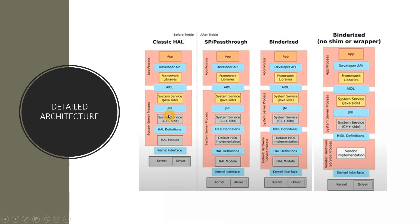So before treble, what was happening is there was a system service written in Java, and the system service written in C++ used to always communicate with the underlying hardware. How this system service written in Java is converted to C++ — they used to talk through JNI acting as a glue. So the C++ system service was the one who would interact with the different HAL modules, the different hardware modules. This was before treble, which means it is before Android Oreo.